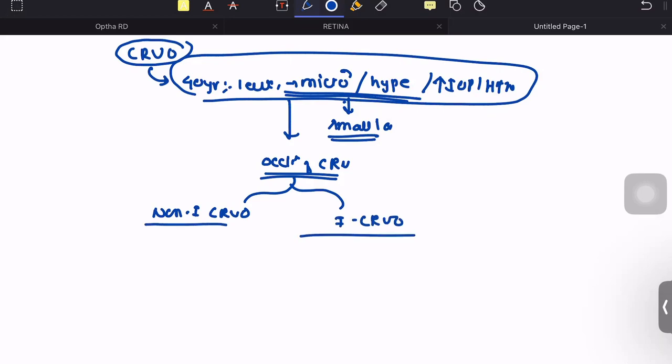Patients would come with painless, progressive, and gradual loss of vision. The visual loss will be slight in case of non-ischemic variety, whereas the visual loss is very profound in case of ischemic CRVO.